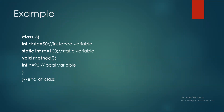ایک simple code example: class A بنائی، instance variable int data = 50 declare کیا۔ پھر static variable: static int m = 100 — static keyword کے ساتھ declare کیا تو یہ static variable بن گیا، simple instance variable نہیں ہے۔ void method بنائی جس کے اندر int n = 90 declare کیا — یہ local variable ہے۔ Java کا کوئی بھی program بغیر class کے نہیں ہو سکتا اور نہ execute ہو سکتا ہے، ہمیشہ class کو close بھی کرنا ہوتا ہے۔